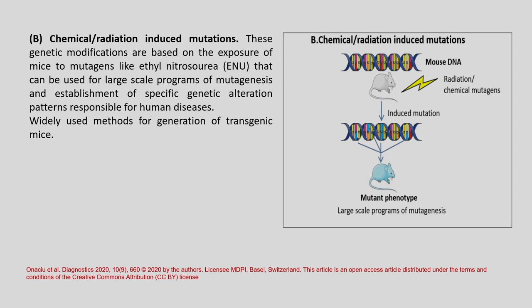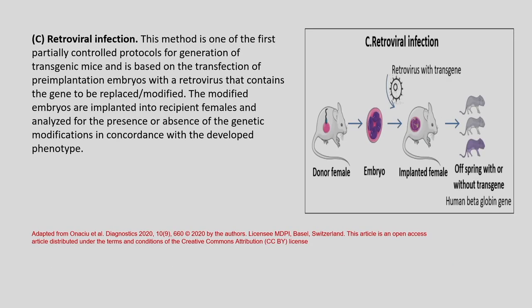The second method is chemical or radiation-induced mutations, using either radiation or chemical mutagens to induce mutations resulting in a mutant phenotype. Genetic modifications based on exposure of mice to mutagens like ethyl nitrosourea and many more such agents can be used for large-scale programs of mutagenesis and establishment of specific genetic alteration patterns responsible for human disease. This is a widely used method for generation of transgenic mice.